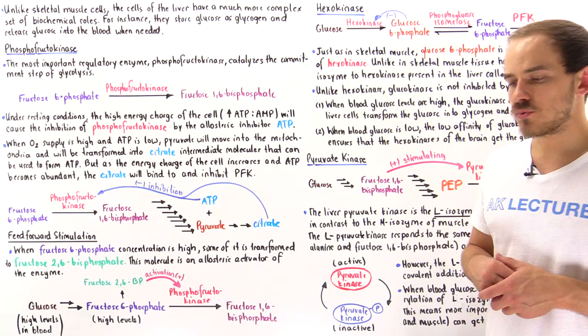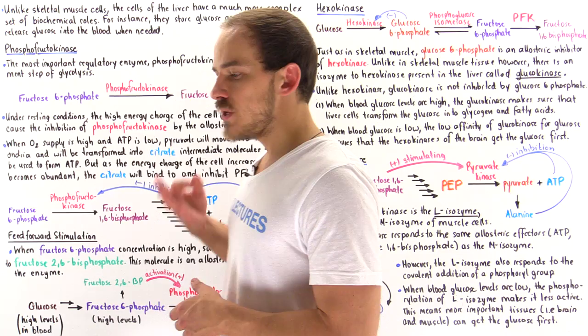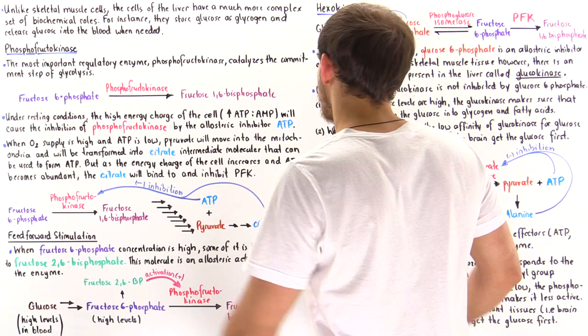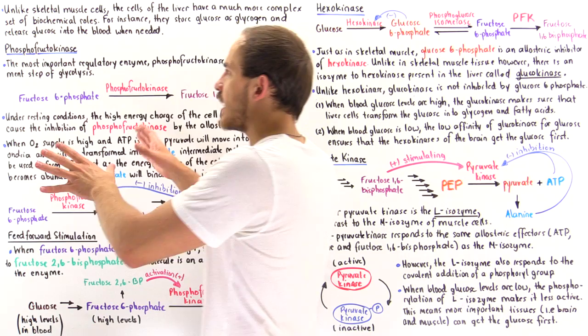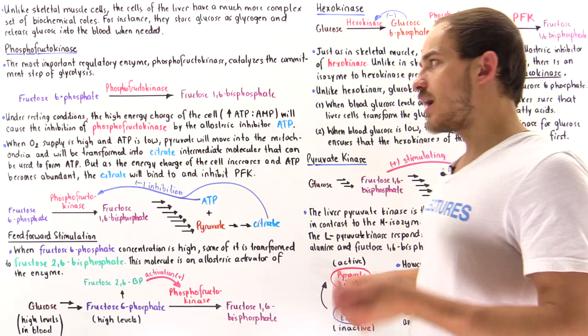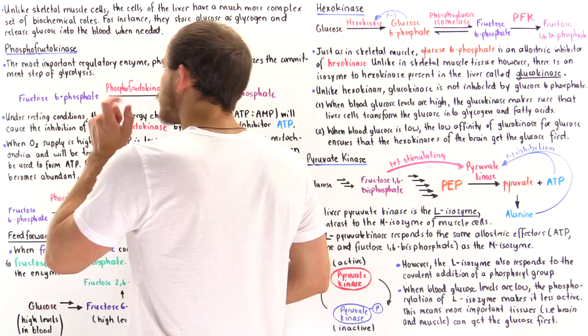Previously we discussed how skeletal muscle cells can regulate the process of glycolysis. There are three major regulatory points in glycolysis, and these are some of the enzymes that regulate that process: phosphofructokinase, which catalyzes step 3; hexokinase, which catalyzes step 1; and pyruvate kinase, which catalyzes step 10. Our cells use these three enzymes because they catalyze irreversible steps in glycolysis.